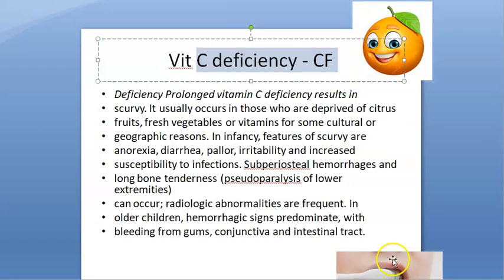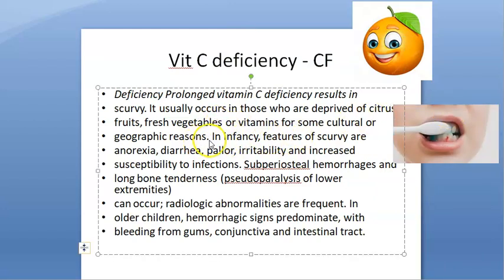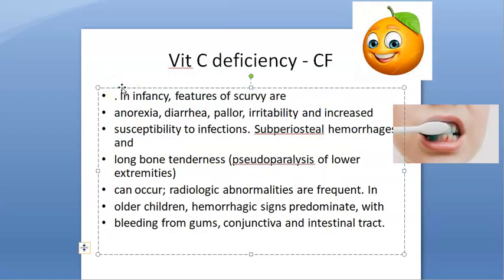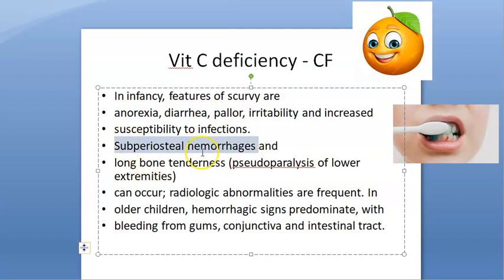What will happen if you do not have vitamin C? In infancy: anorexia, diarrhea, pallor, irritability, increased susceptibility to infections, subperiosteal hemorrhage, and long bone tenderness. Vitamin C helps immune function through leukocytes, so without it you will get infections.